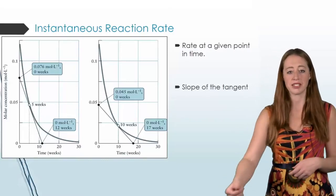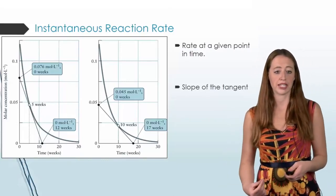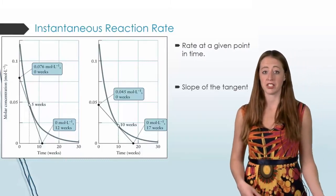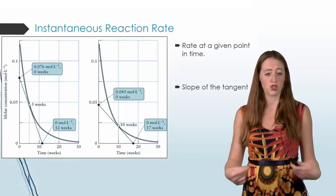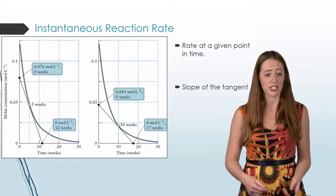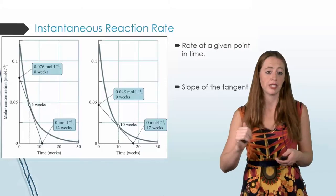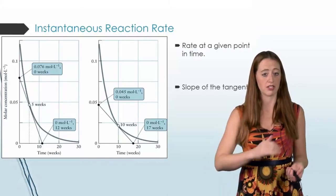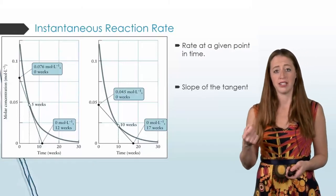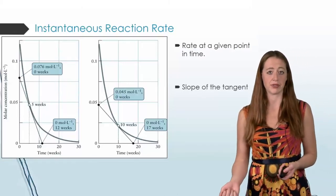But maybe we want to know, well if we give you this concentration of reactant, what is its rate going to be? And to get that, what we actually do is we look at the slope of the tangent of the curve. So that's drawn here at two different time points. And you can see that when the concentration is higher, the slope is much steeper. And when the concentration is lower, the slope is much lower.